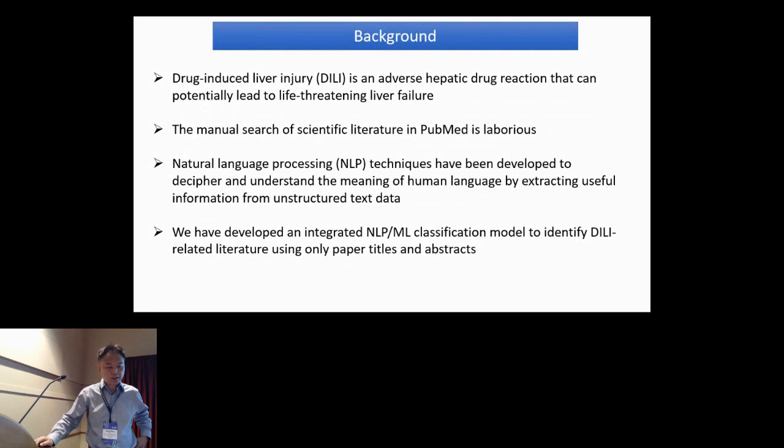Drug-induced liver injury, DILI, is an adverse hepatic drug reaction that can be life-threatening, potentially leading to liver failure. Previously published work in the scientific literature can provide valuable insight for understanding liver toxicity as well as drug development. However, the manual search of scientific literature in PubMed is laborious. NLP techniques have been developed to decipher and understand the meaning of human language by extracting useful information from unstructured text data. We have developed an integrated NLP and machine learning model to identify DILI-related literature using only paper titles and abstracts provided by CAMDA.